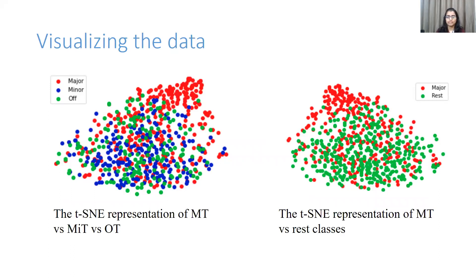Prior to designing the topic classifier, we wanted to understand the characteristics of the Switchboard corpus and visualize the tags we annotated it with. We plotted the TSNE embeddings for the three classes as seen in the image on the left. We observed that the minor and off-topic classes are entangled, and thus decided to merge these two classes into a REST class. The TSNE plot for the data with the merged class can be seen on the right, and the classes are now less entangled. Our task is now a binary classification task with two classes: major and REST.